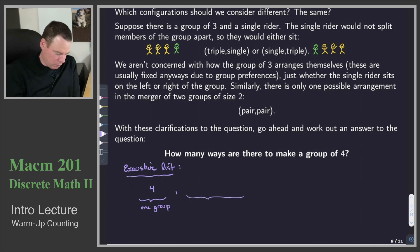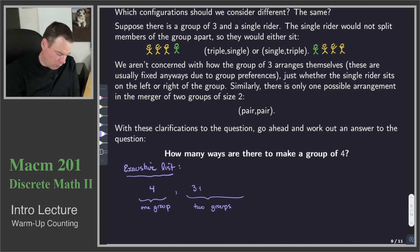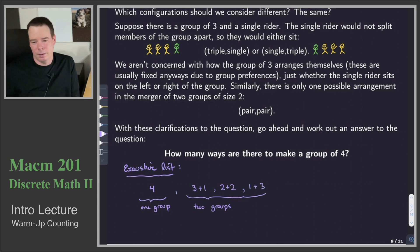Now, what about two groups joining together on a chair? We could have a triple followed by a single, we could have two pairs, or we could have a single followed by a triple. So that's: a group of three plus a group of one, two groups of two, or a group of one followed by a group of three.